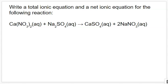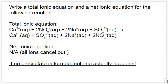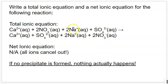Let's practice another one. We have calcium nitrate reacting with sodium sulfate to make calcium sulfate and 2 sodium nitrates. You'll notice that all four of these compounds are aqueous, and that's going to make something interesting happen. So let's get our total ionic equation and see what's going on. When we split everything up that is aqueous, we're actually splitting up everything, since everything was soluble. So we have Ca2+ plus 2 NO3− plus 2 Na+ plus SO42−, making Ca2+ plus SO42− plus 2 Na+ plus 2 NO3−. Calcium goes from here to here unchanged, nitrate goes from here to here unchanged, sodium goes from here to here unchanged, and sulfate goes from here to here unchanged.